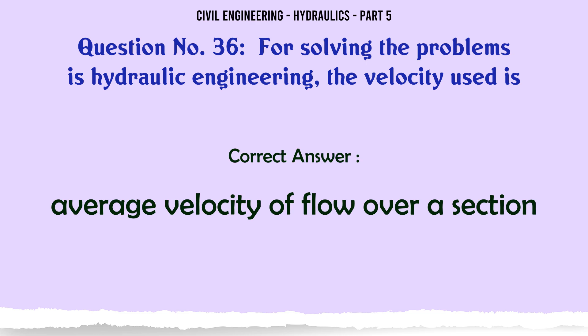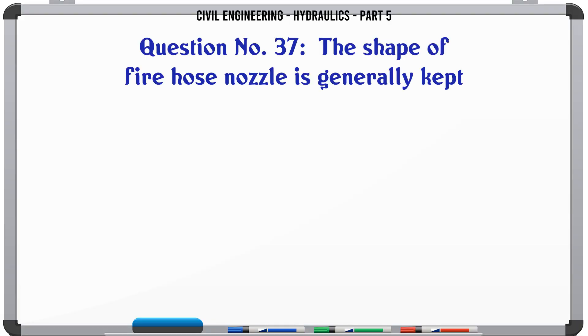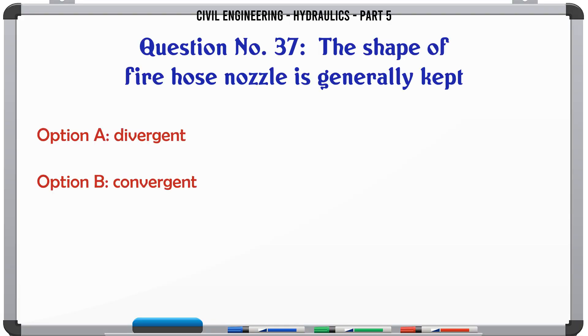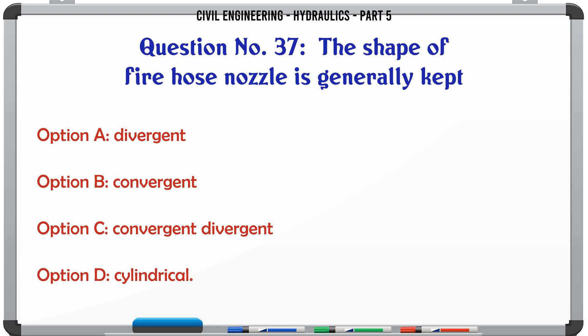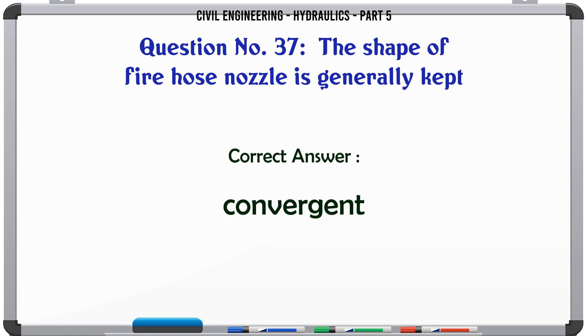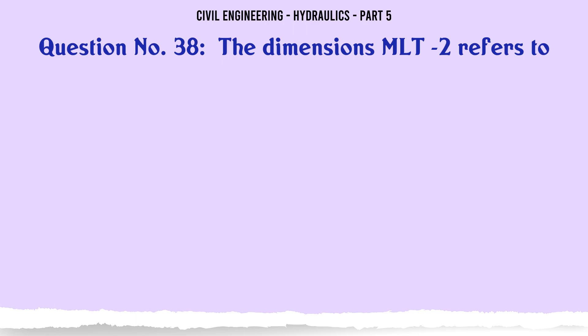For solving problems in hydraulic engineering, the velocity used is the average velocity of flow over a section. A nozzle is generally kept: A. divergent, B. convergent, C. convergent-divergent, D. cylindrical. The correct answer is convergent.